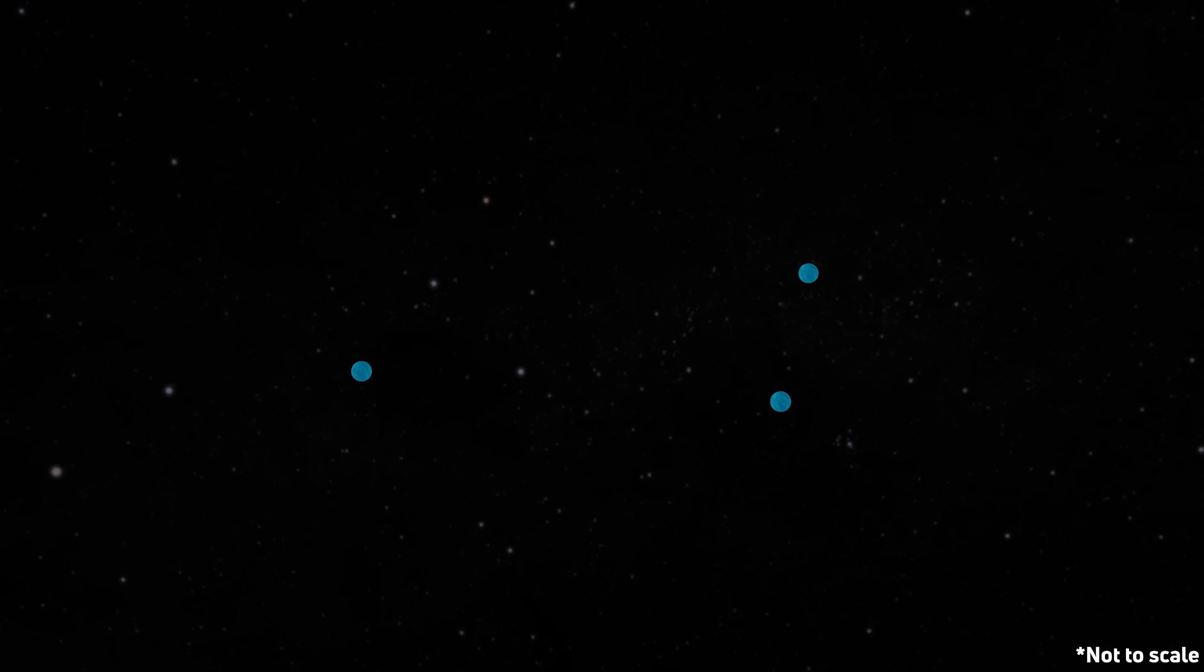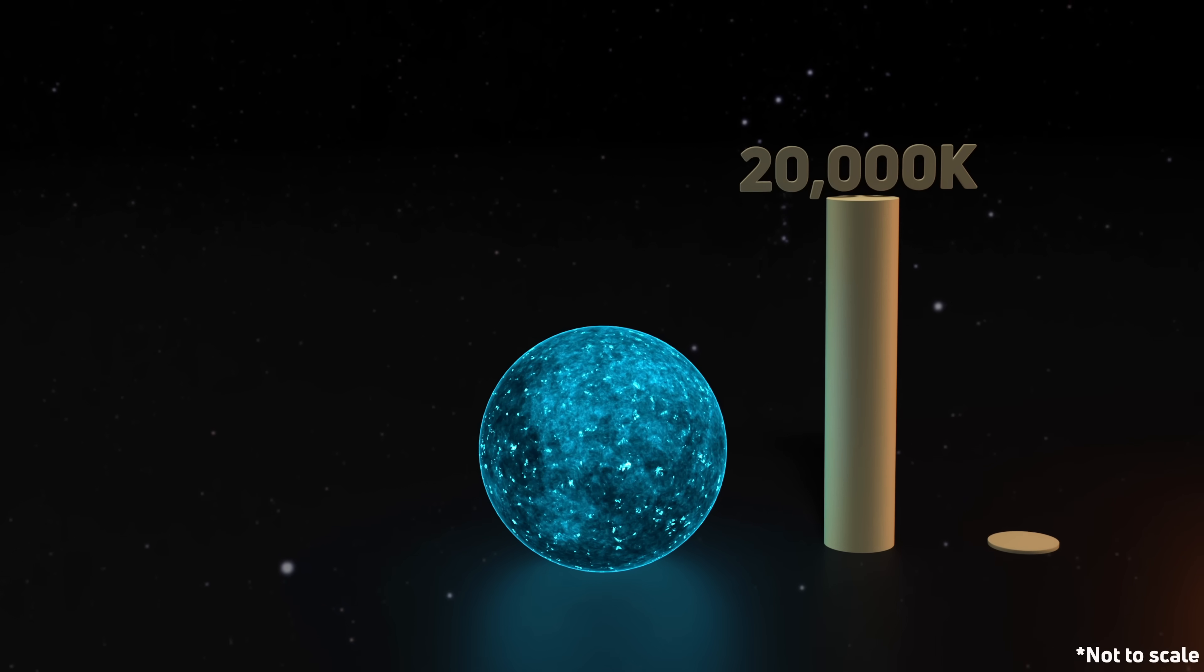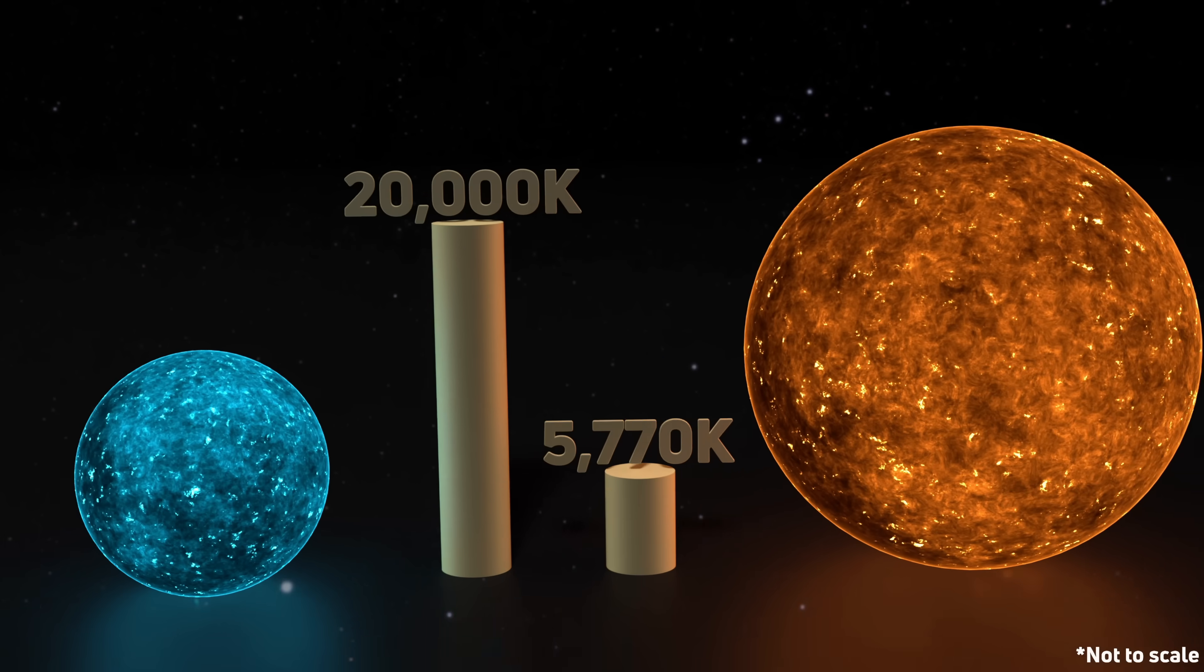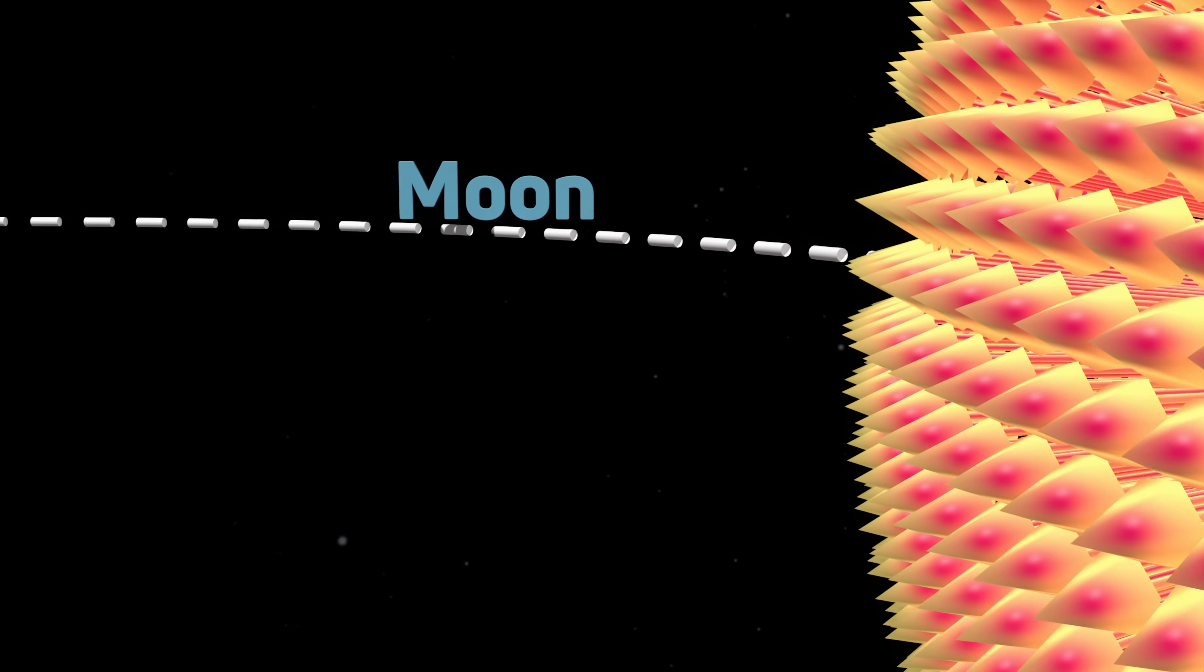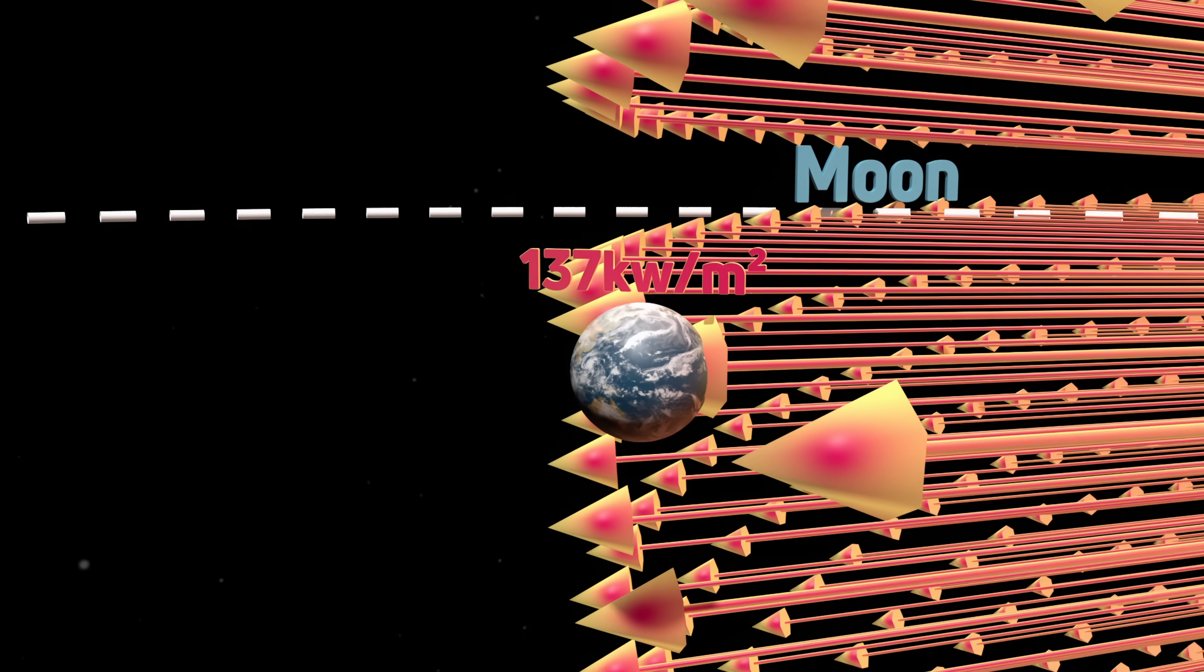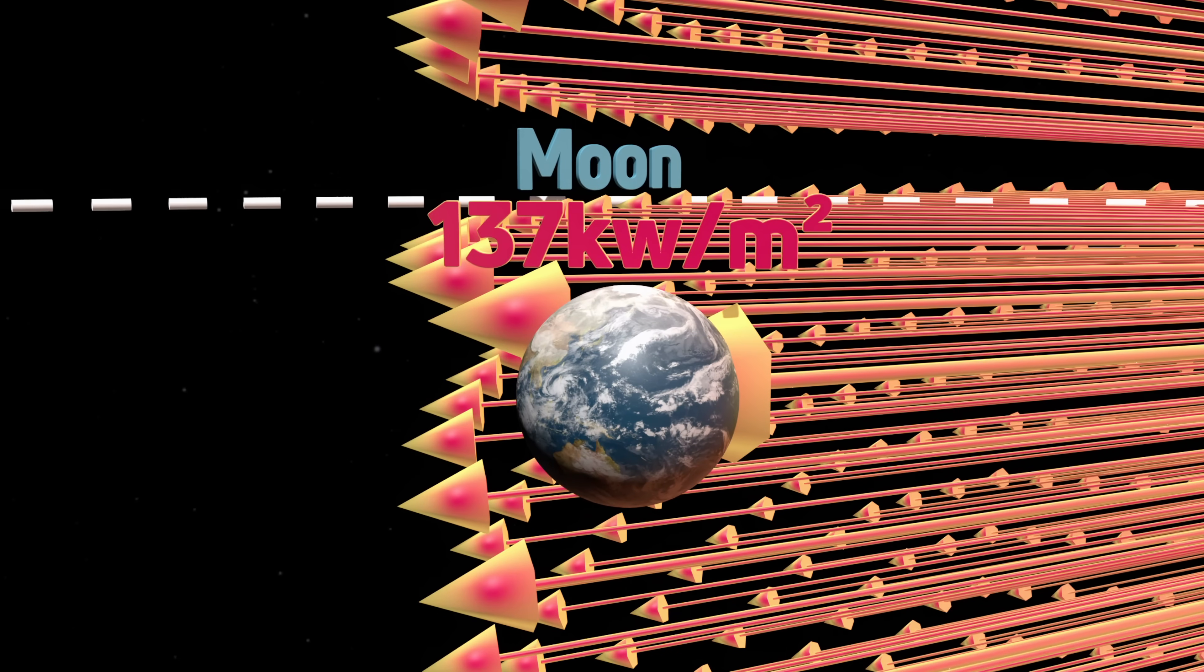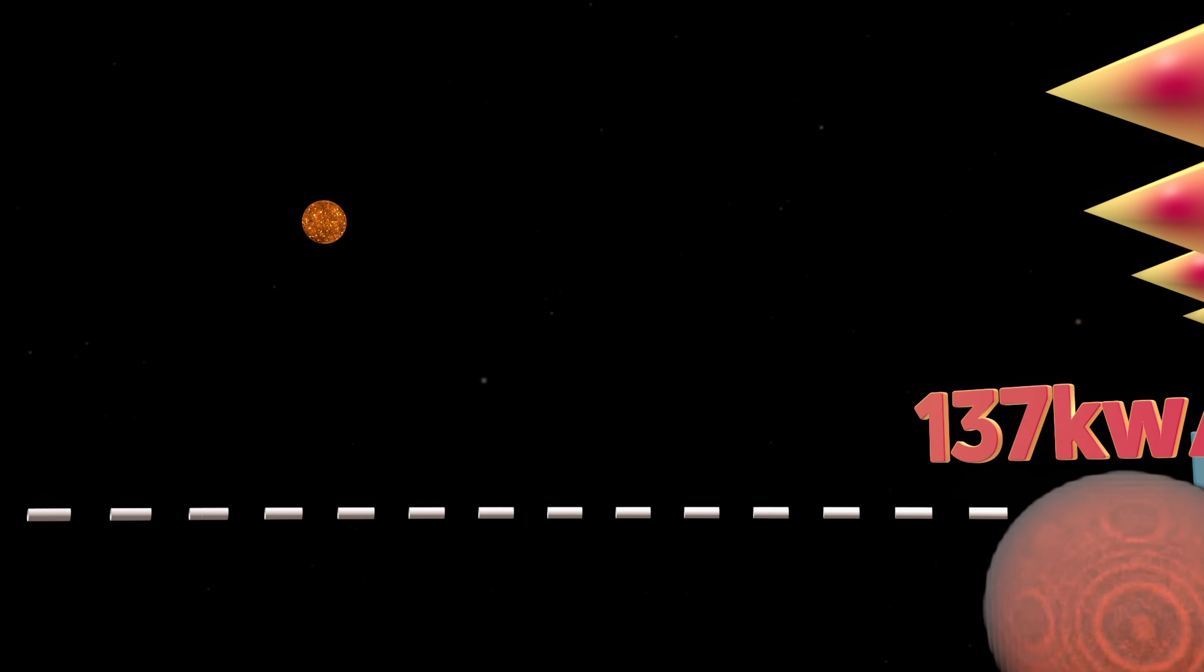But let's pretend they were. Would the nearest white dwarf cook us? The average white dwarf temperature is around 20,000 Kelvin, which is like four times hotter than the sun. At that temperature, our nearest white dwarf would cast 137 kilowatts per square meter of radiation to the surface. Which is about a hundred times what we receive from the sun. Oh, we're cooked.